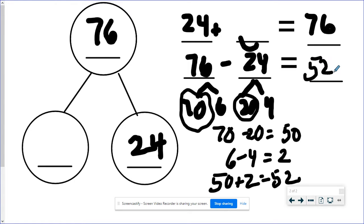So 76 subtract 24 equals 52. So 24 plus 52 equals 76. My missing part here was 52.